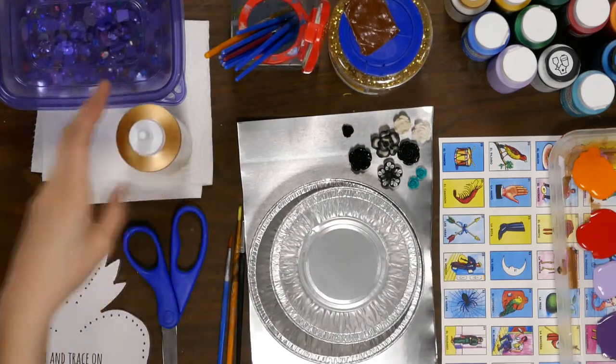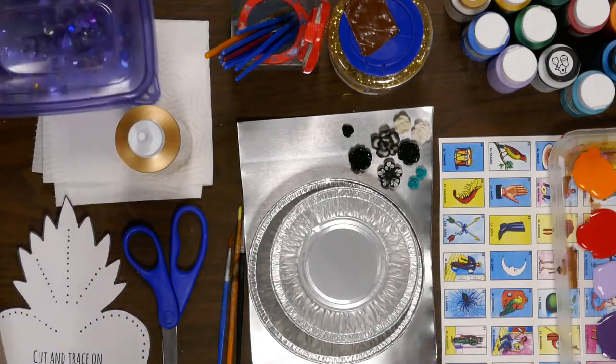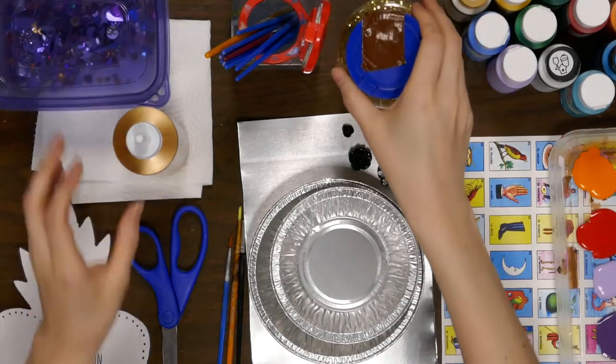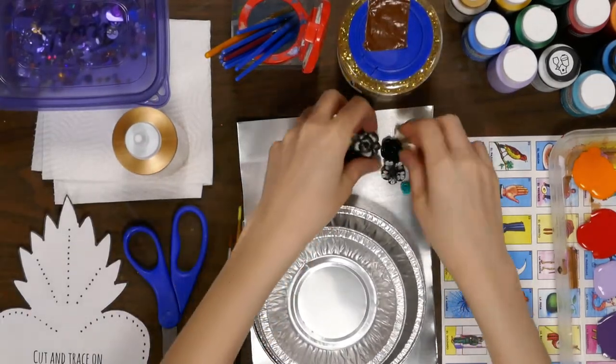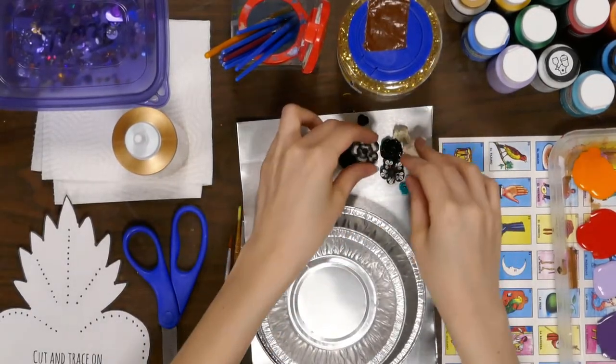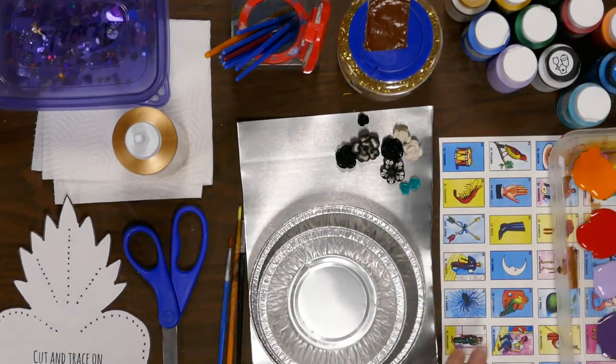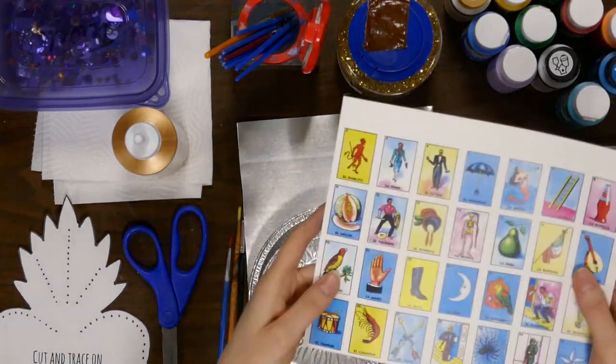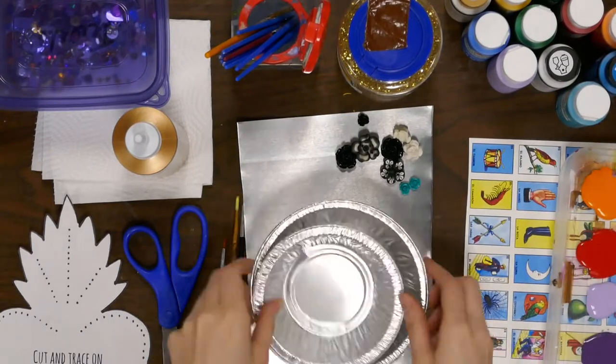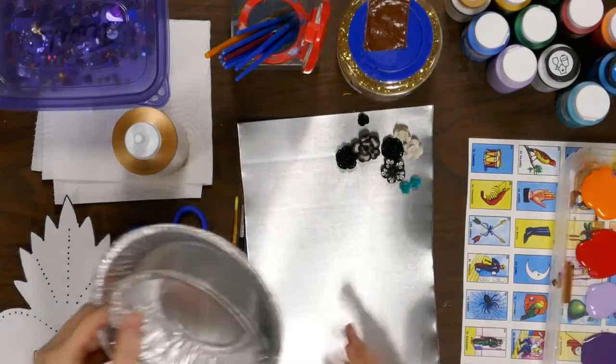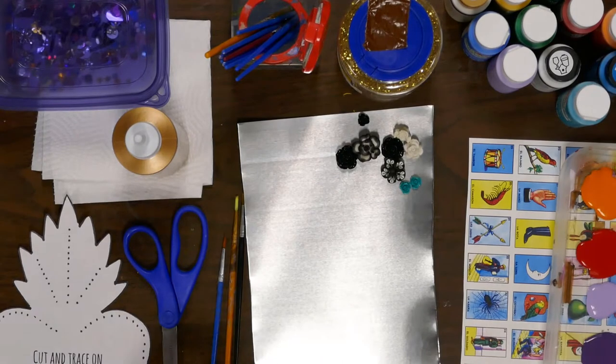You should have some tacky glue, a bag of gems, some gold glitter, assorted clay flowers, some paints, and Loteria cards, paintbrush, and some tin pie pans. And this is metal flashing.